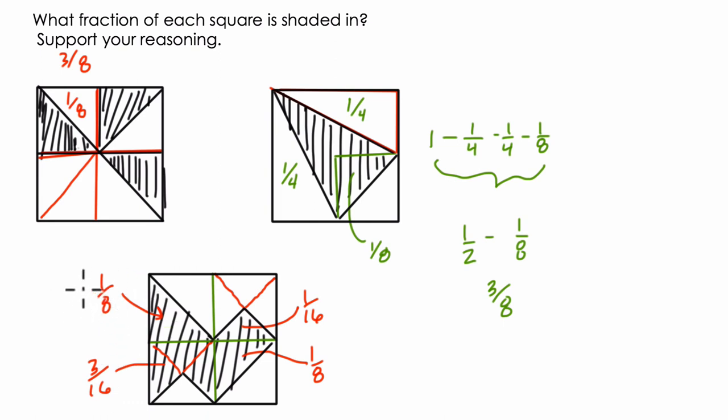Now I can think of an eighth as two sixteenths. These triangles, you can see just one, two of them. Each of these small triangles is a sixteenth. Here's one sixteenth. Here's another, it's two sixteenths. This is also two sixteenths.